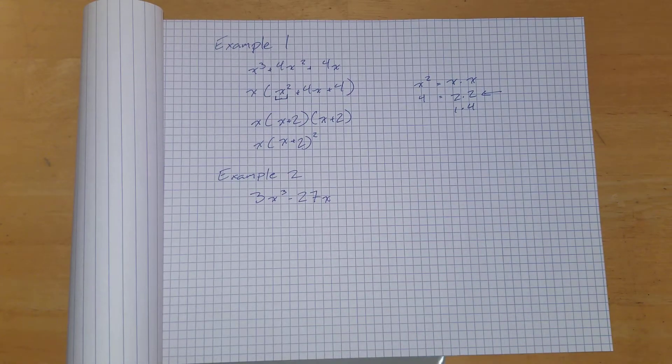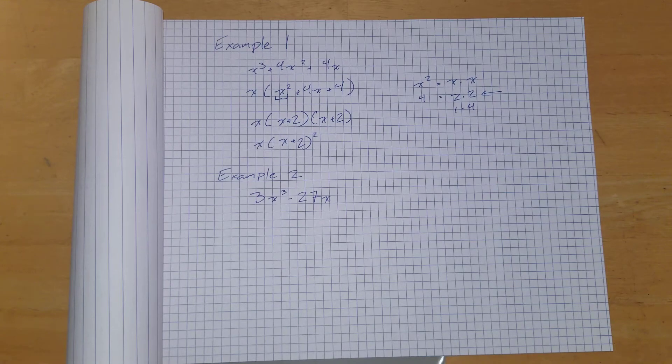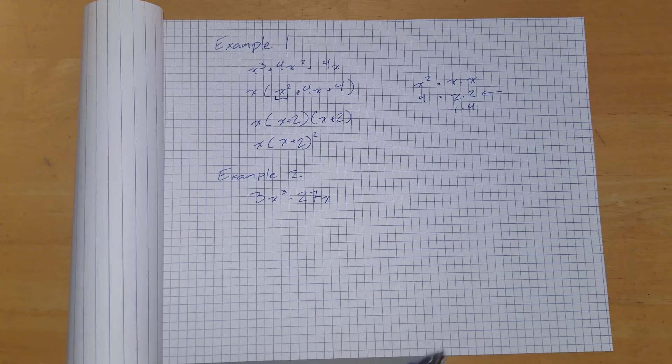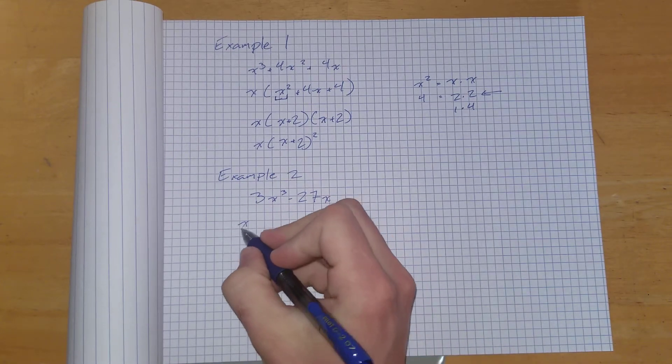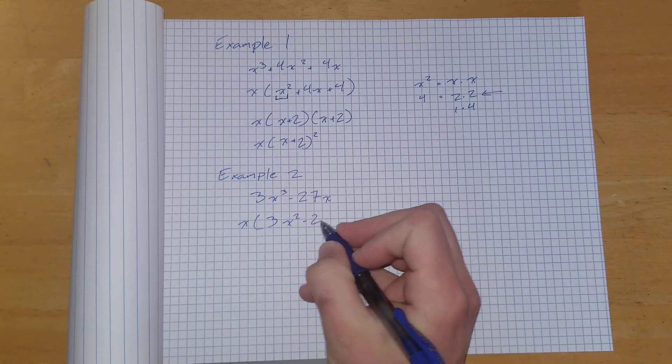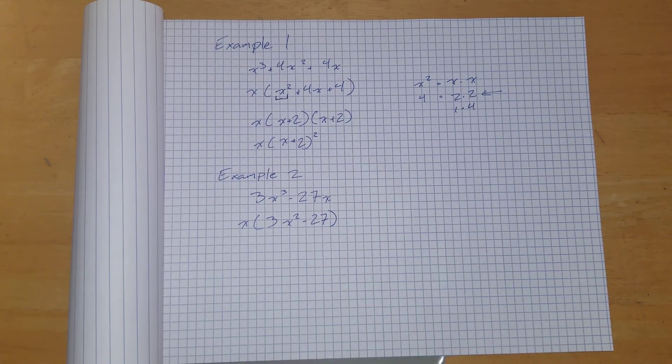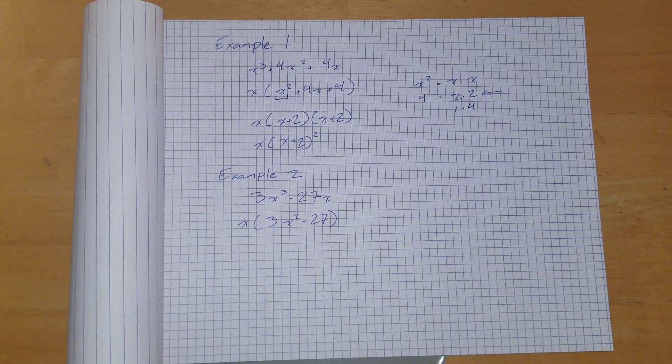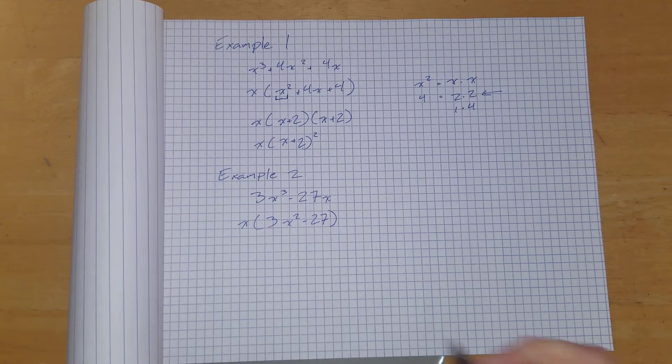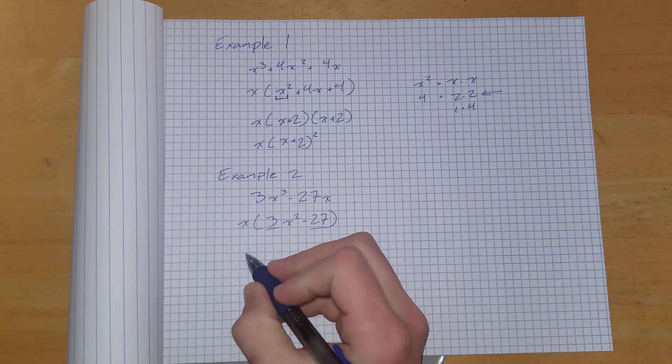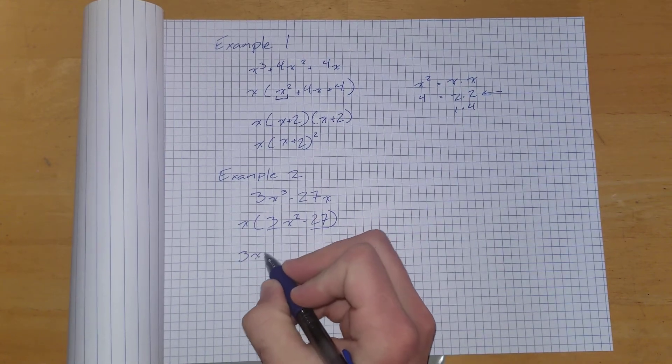So again, let's look to see what these two share. We see that both of them share an x again. So 3x squared minus 27. What else do we notice? Pause the video and think about it for a little bit if you need to. You can notice that both of these are divisible by 3. So I can take a 3 out as well.